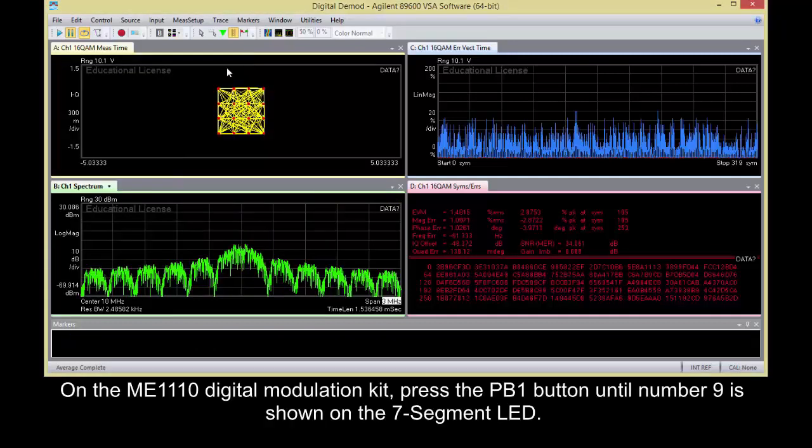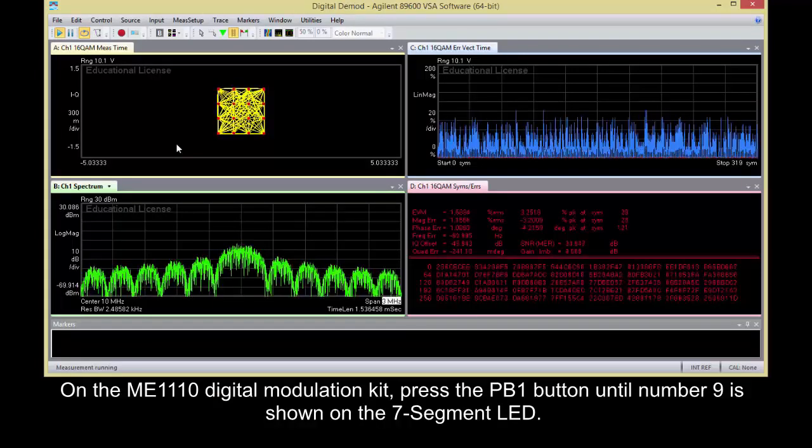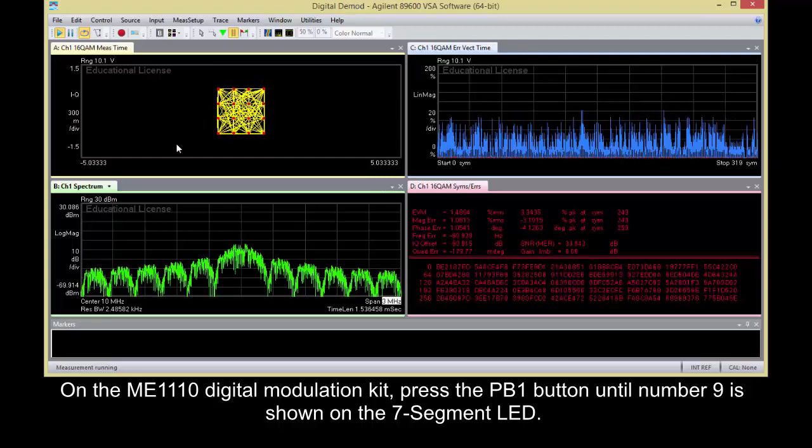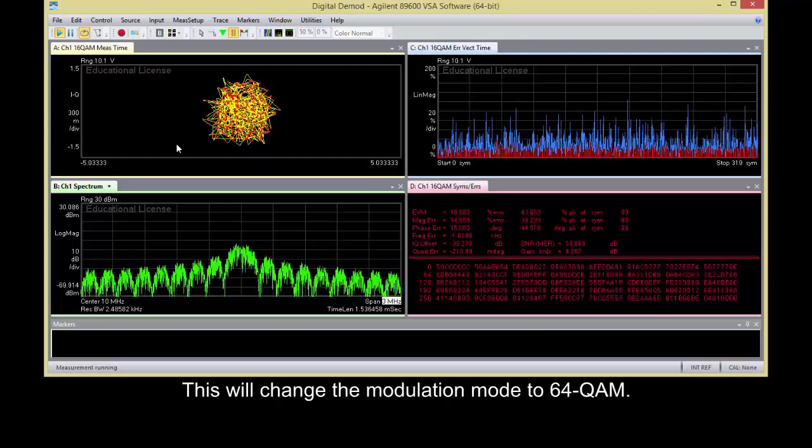On the ME1110 digital modulation kit, press the PB1 button until number 9 is shown on the 7-segment LED. This will change the modulation mode to 64QAM.